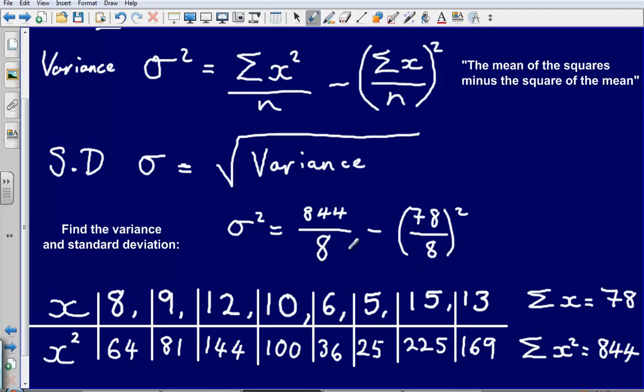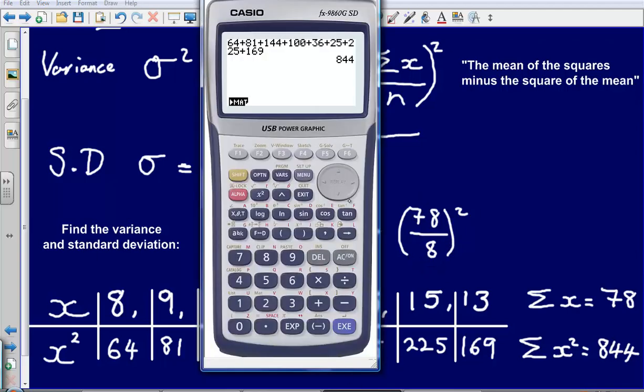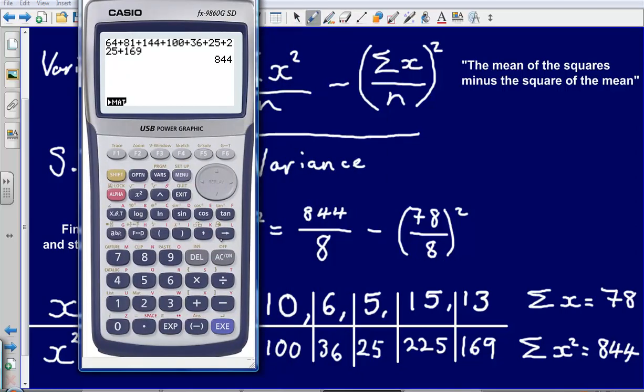And that gives me an answer of 10.4375. So let's work this out using our calculator. So I've got 844 divided by 8 minus 78 divided by 8 squared. And that gives me an answer of 10.4375.